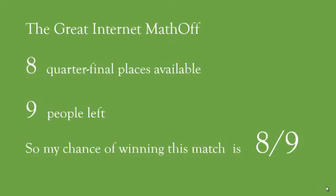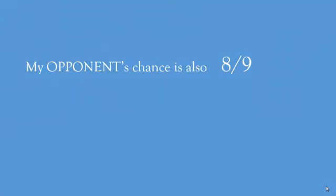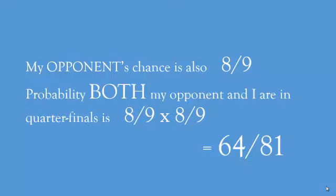This surprises me because my opponent is very formidable, and I thought I was the underdog. But in fact, my opponent also has an eight-ninths chance by the same logic. So if we investigate further, we see that by basic probability, the probability that both my opponent and I will be in the last eight is eight-ninths times eight-ninths, which is 64 over 81.